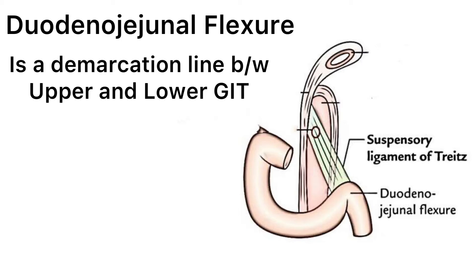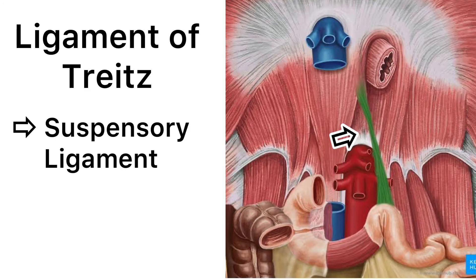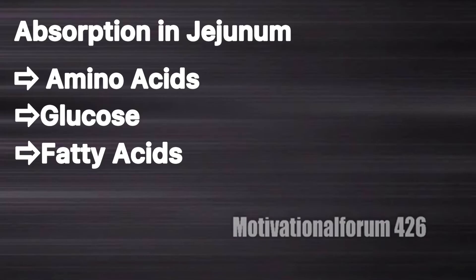This duodenojejunal flexure is held by the ligament of Treitz, which is the suspensory ligament. In the jejunum, most absorption of amino acids, glucose, and fatty acids takes place.